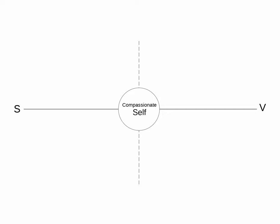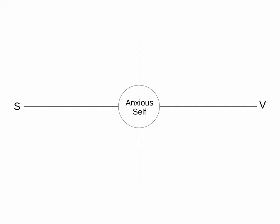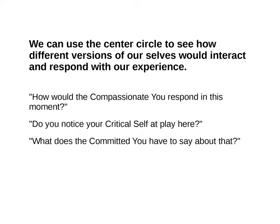The center circle of the CFT matrix represents the self, which can exist as many different versions. At times, we are the compassionate self; at others, we are the anxious self, the critical self, the driven self, the deeply frightened self. We can use the center circle to see how different versions of ourselves would interact and respond with our experience. How would the compassionate you respond in this moment? Do you notice your critical self at play here? What does the committed you have to say about that?